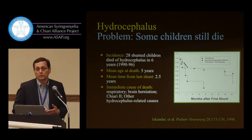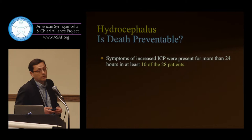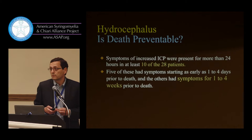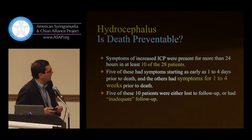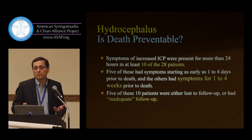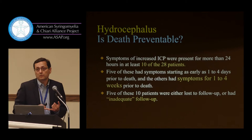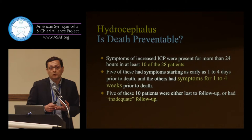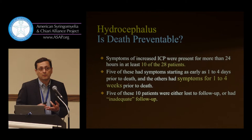I went back to the health records in Jefferson County and looked at hospital records to figure out what went wrong. I found that 10 of the 28 patients had symptoms of high ICP for at least 24 hours, and 5 of those had symptoms up to 4 weeks prior to dying. Five had inadequate follow-up. Whose problem is this? Is it the family that didn't bring them to medical attention? The primary caregiver who didn't know they needed to see a neurosurgeon? Or is it the neurosurgeon who did not give proper follow-up and did not educate the families enough to understand that this is a life-threatening disorder and you don't wait until the next day when there is a headache?